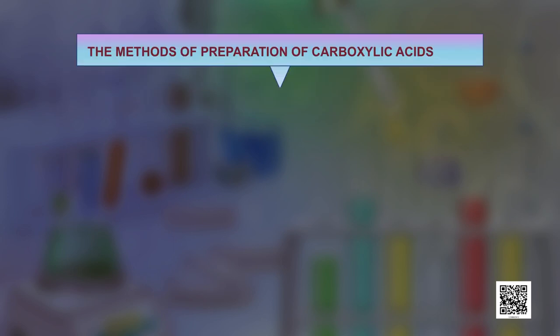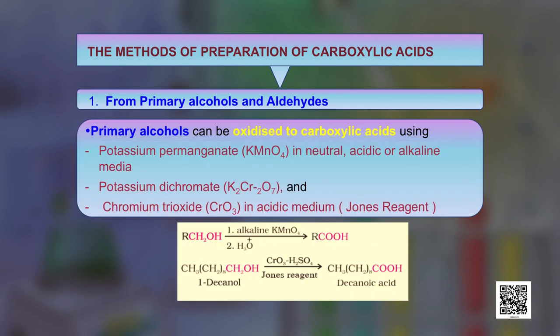We will now discuss the preparation of carboxylic acids. There are several methods; we will discuss a few important ones. The first is from primary alcohols and aldehydes. Primary alcohols can be oxidized to carboxylic acids using potassium permanganate (KMnO4) in neutral, acidic, or alkaline media. The second reagent is potassium dichromate (K2Cr2O7), and the third is chromium trioxide (CrO3) in acidic medium, specifically known as Jones reagent. As seen in the reactions, alcohols are oxidized to carboxylic acids using these reagents.